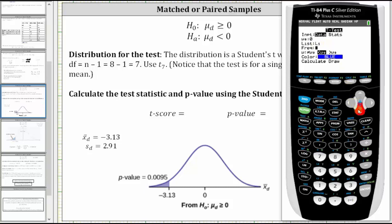We are not using a frequency table, and therefore we enter one for frequency, down. We're testing to see whether mu_d is less than zero, which means we select the less than inequality symbol, which is here in the middle, enter, down to calculate, and press enter.